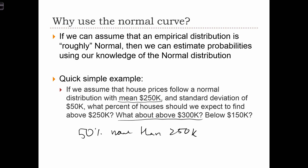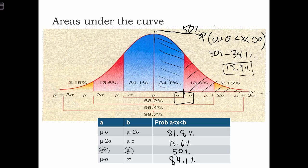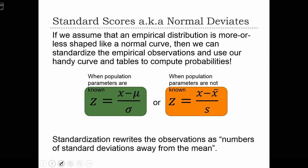Well, we know that the standard deviation is $50,000, so essentially we're asking: what percent of houses have a value of more than mu plus sigma? That was actually what we just calculated on the last slide — what percent of houses has a value more than mu plus sigma — and we said it was 15.9%.